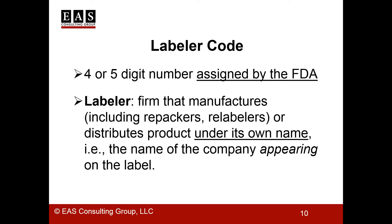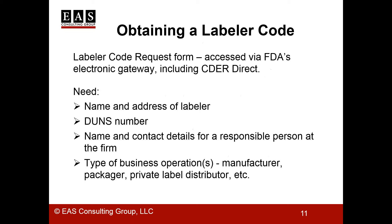How do you get a labeler code? Obtaining one is a straightforward process done through the FDA's electronic gateway and can be done through CDER Direct. Just as for the establishment registration, you need to provide the name and address of the labeler, the DUNS number, the name and contact details for a responsible person at the firm, and the type of business operations being performed. It sometimes takes a few days to actually get a code assigned, but it is easy.